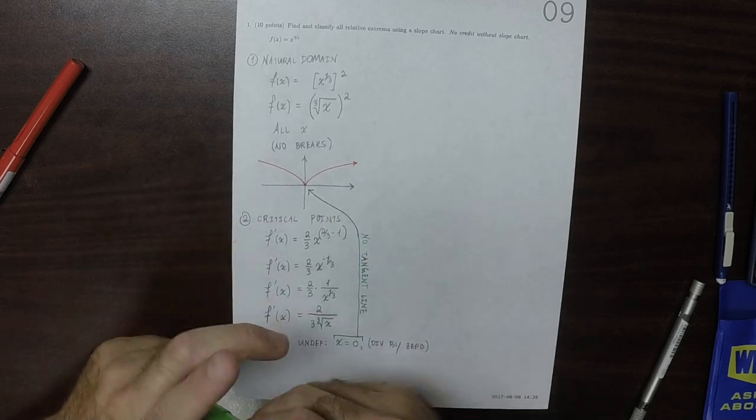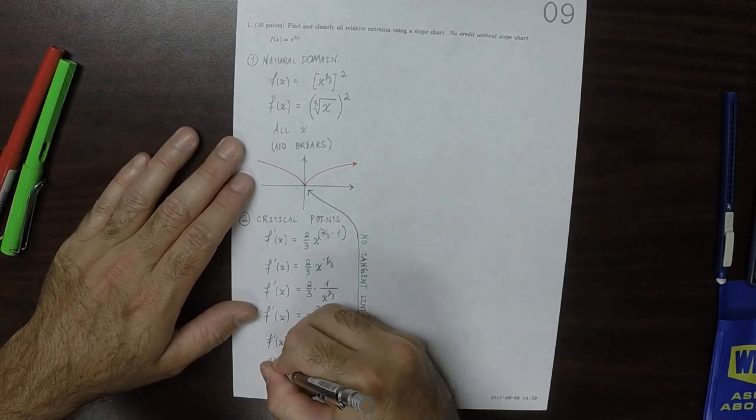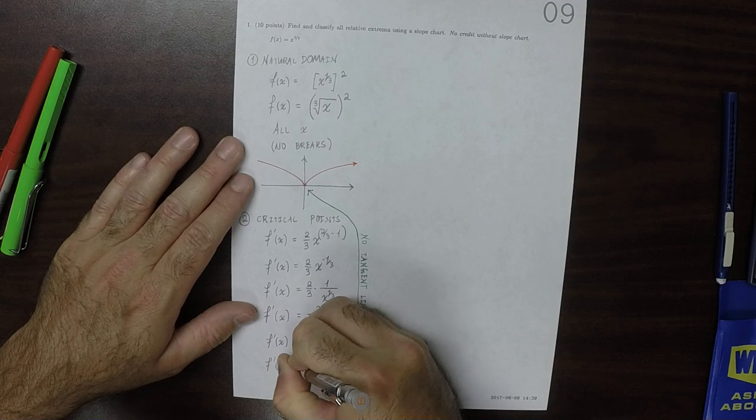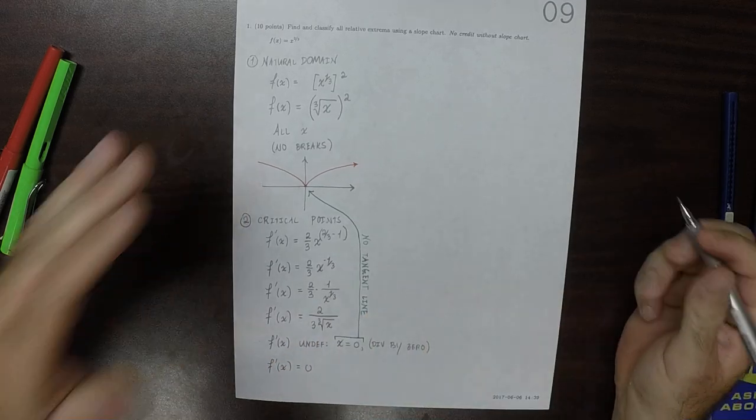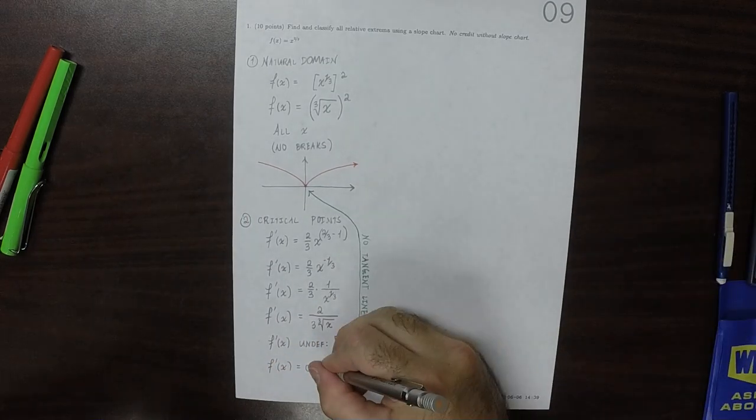Okay, then, besides that, is there anywhere where the derivative is equal to zero? And the answer is, there are none.